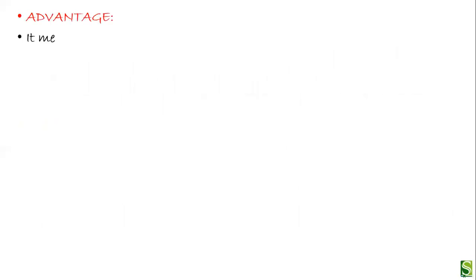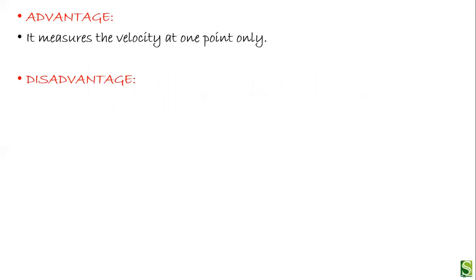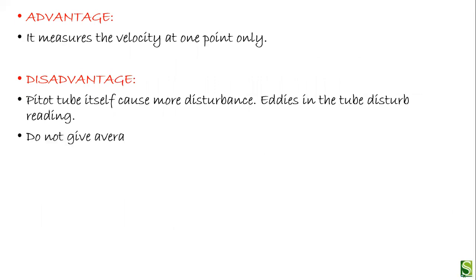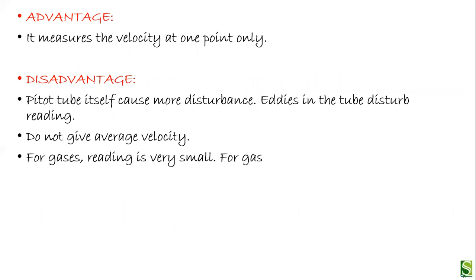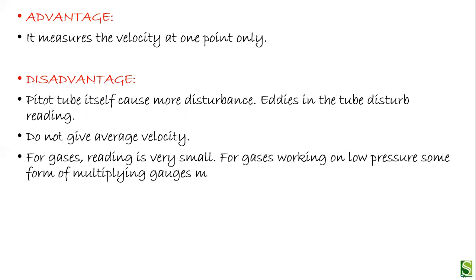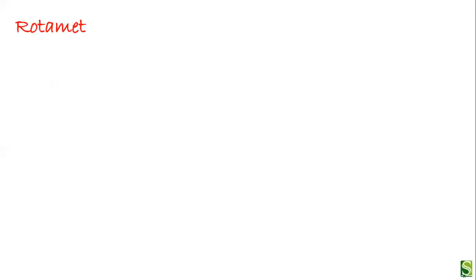Disadvantages of the pitot tube: the pitot tube itself causes disturbance, eddies in the tube disturb the reading, and it does not give average velocity. For gases, the reading is very small, and for gases working at low pressure, some form of multiplying gauges have to be used.